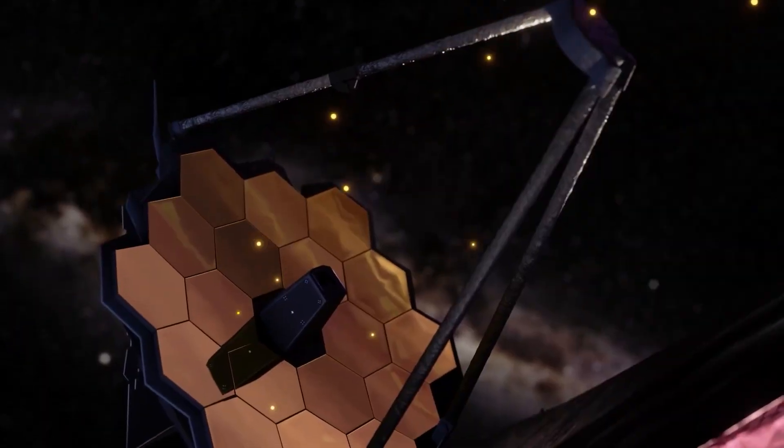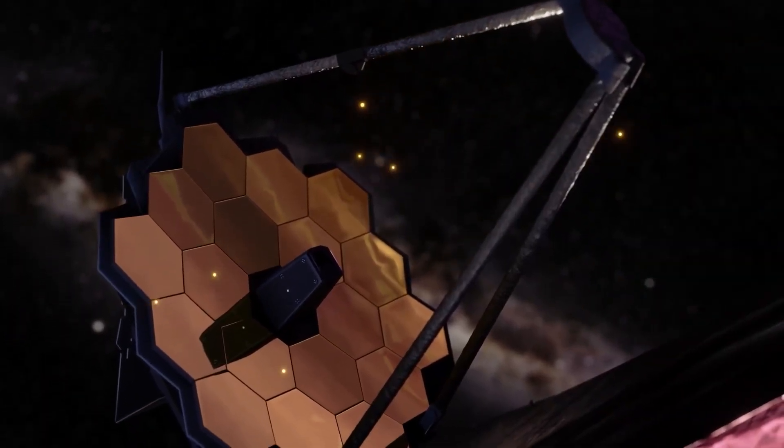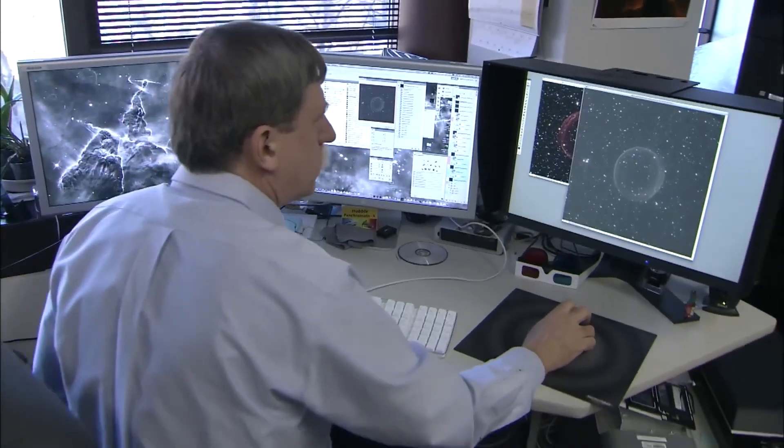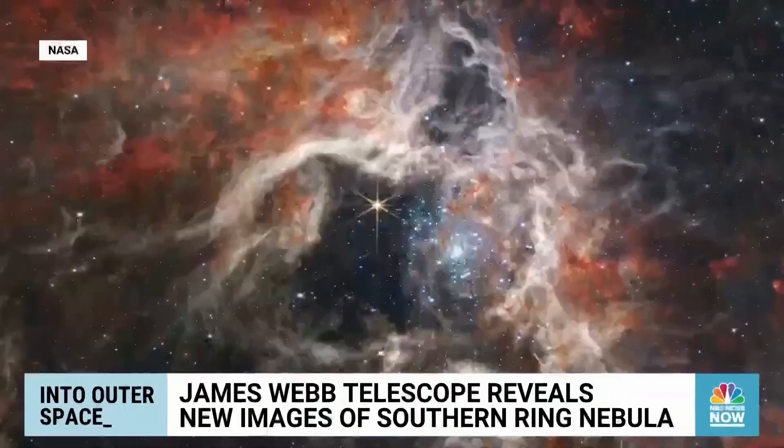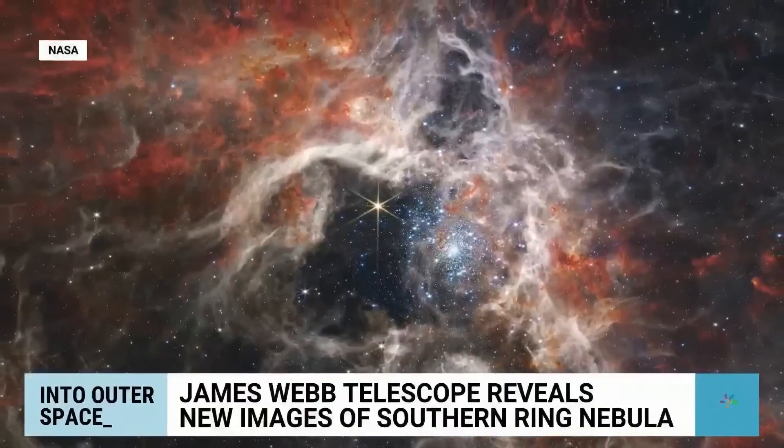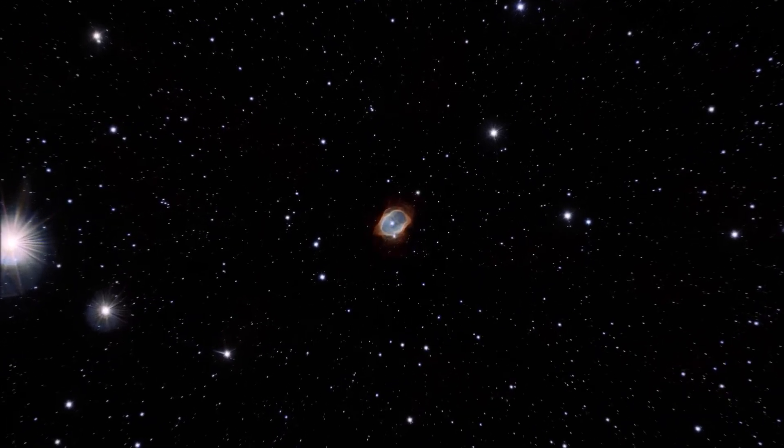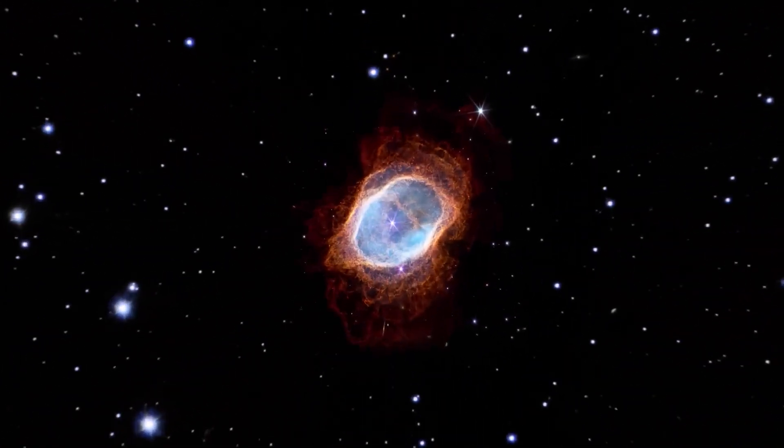The JWST has also captured images of the Southern Ring Nebula that have caused astronomers to reconsider their assumptions about this unremarkable object. Located approximately 2,000 light-years away from Earth in the constellation of Vela, the Southern Ring Nebula is visible in the southern sky.